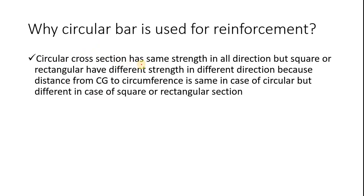Circular bar has the cross section strength in all direction same, but square and rectangular have different strength. Since due to changing of the orientation the CG and moment of inertia changes of rectangular and square, so it is always suggested to use circular bar.